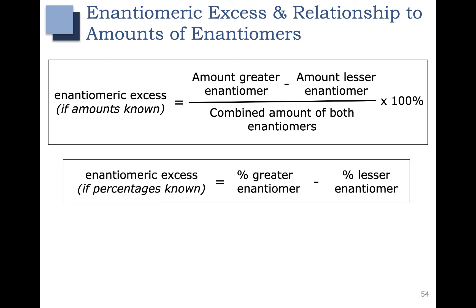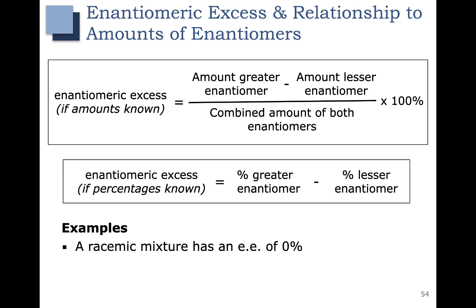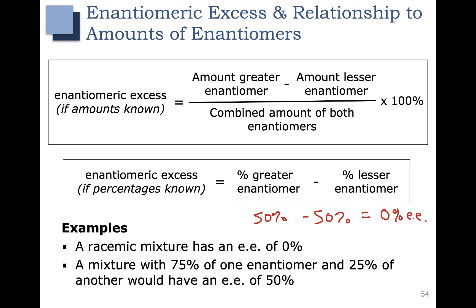If all you know is percentages, you should still be able to calculate the enantiomeric excess. For example, a racemic mixture has an EE of 0%, which makes sense because you would have 50% of one enantiomer and 50% of the other — subtracting these numbers gives 0% EE. Here's another example: if you have 75% of one enantiomer and 25% of another, you get an EE of 50%. These examples also make sense with the top equation — 5 grams of each enantiomer gives 0% EE, or 3 grams of one and 1 gram of the other gives 50% EE.